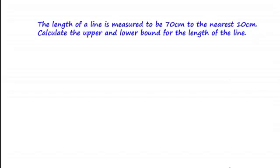Hi guys and welcome to this introductory tutorial on calculating upper and lower bounds for rounded values. An upper and a lower bound is simply just a limit which acts as a boundary for a set of possible values. In a typical question you will generally be asked to calculate the upper and lower bound for a value which has been estimated or rounded to some degree of accuracy.